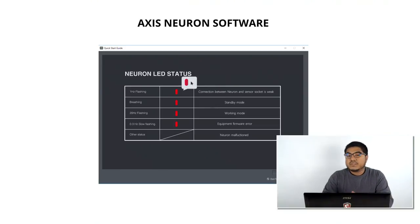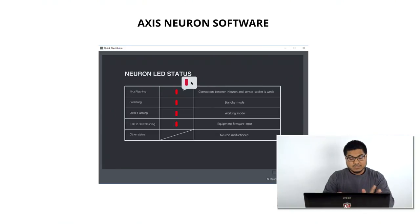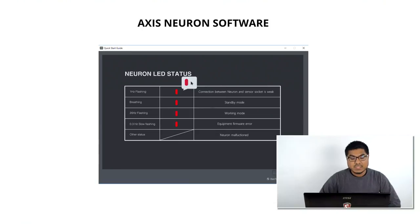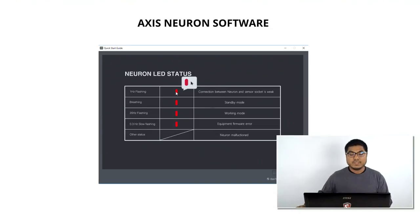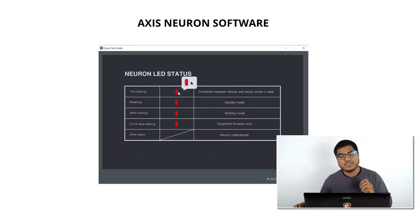Inside of Axis Neuron, we have a quick start guide on the welcome screen. You'll navigate a couple of pages forward and notice the page that says Neuron LED Status. Do not overlook this page — it is very important. Without this, we don't know the current status of the Perception On sensors. If you click on the image, it's like a GIF activator and it'll show you the blinking status of the Perception On sensor.